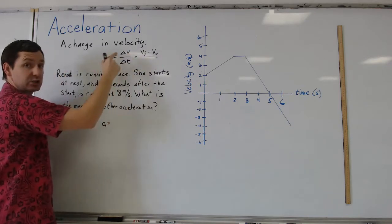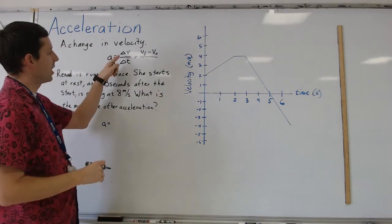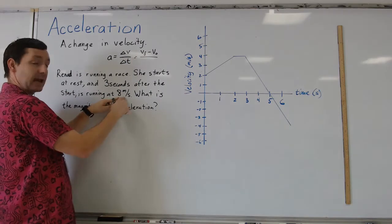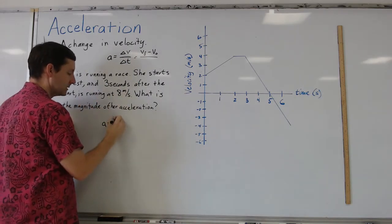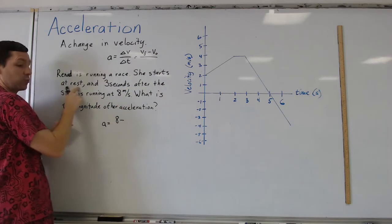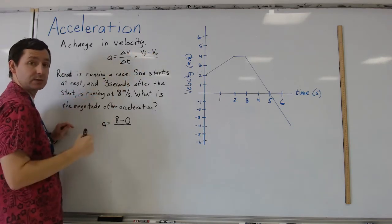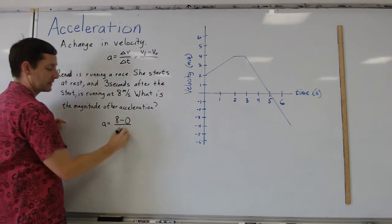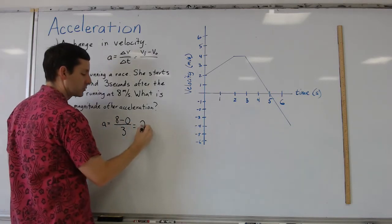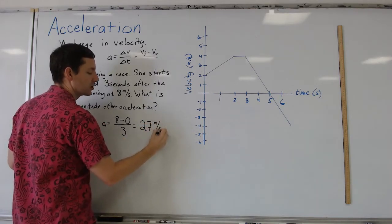The change in velocity would be your final velocity minus your initial velocity. Anytime you see delta — whether it be in physics, chemistry, or math — it always means the final minus the initial. When you saw this for slope, delta y was y2 minus y1. It's always the final minus the initial. So the final velocity is eight meters a second. We'll go eight minus the initial velocity — which in this case she starts at rest, so zero — divided by the amount of time, which is the three seconds. We work that out: eight minus zero is eight, divided by three. Our final answer is 2.666 repeating, so 2.7 meters per second squared.